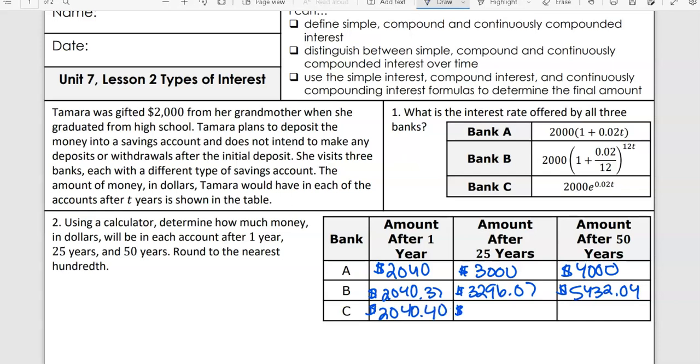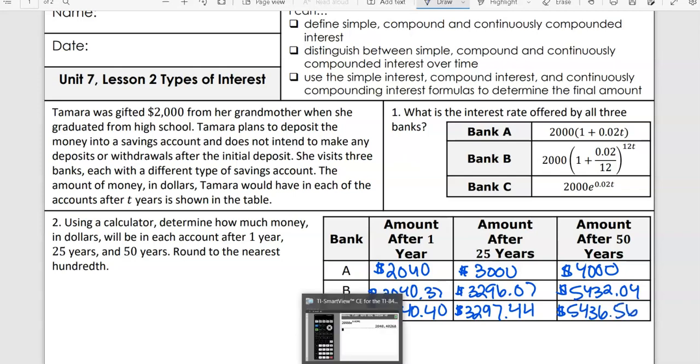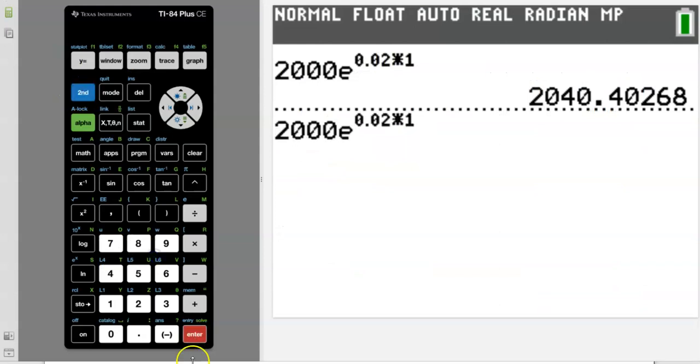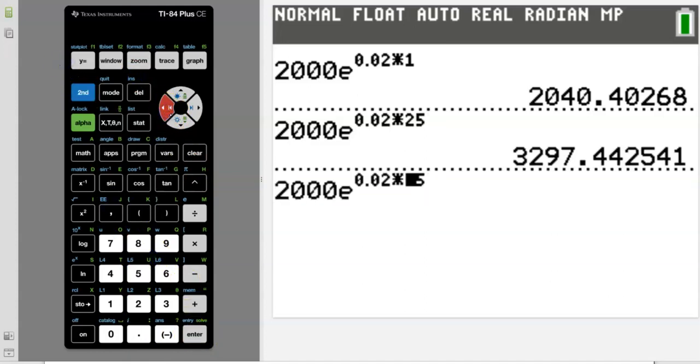Let me know what you got for 25 years. 3297.44, good. And then 50 years, 5436.56, good. And just one more time to bring it back, 2nd enter brings it back, change that 1 to a 25, 2nd enter, go back, change the 25 to a 50. So are we comfortable with calculators?